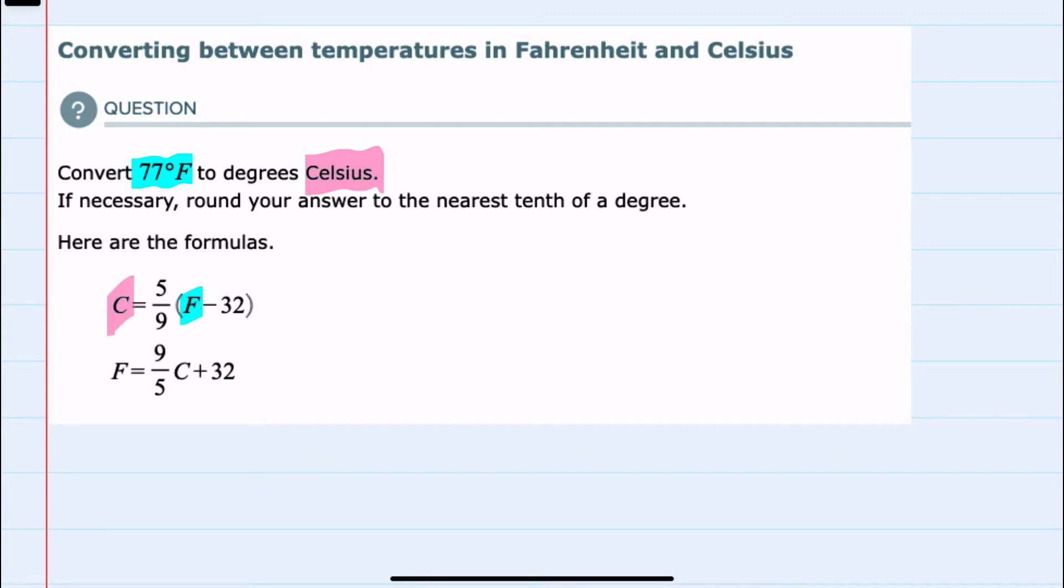So I'll rewrite this formula as Celsius equals 5 ninths, and here I'm going to replace the F inside the parentheses with the 77 that we were given, and from there we can see that would be minus 32 inside the parentheses. So now that I've made the substitution,